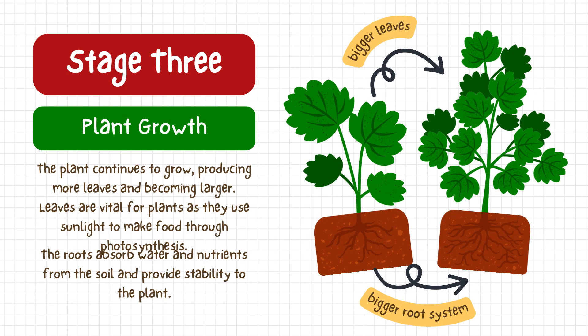Stage three is plant growth. The plant continues to grow, producing more leaves and becoming larger. Leaves are vital for plants as they use sunlight to make food through photosynthesis. The roots absorb water and nutrients from the soil and provide stability to the plant.